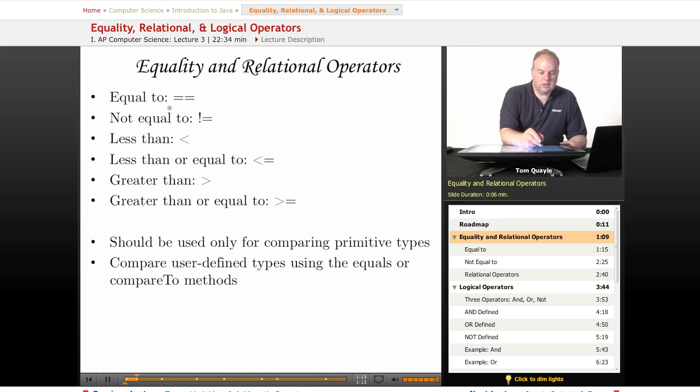The equality operator, equal to, is two equal signs. Now, it's very important to remember that when you're testing for equality, you must use two equal signs, not one equal sign. One single equal sign is the assignment operator.